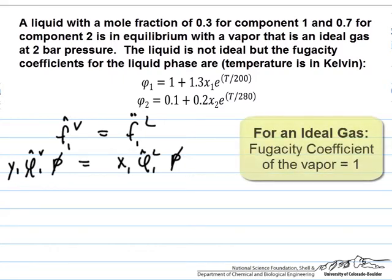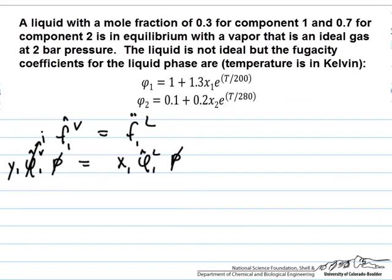We can simplify the equation by canceling the pressure terms. We are told that the vapor phase is an ideal gas, and recall that for an ideal gas the fugacity coefficient is 1. Now we have a simplified equation where we have a known mole fraction in the liquid and an expression for the fugacity coefficient in terms of temperature. We need to make an initial guess.